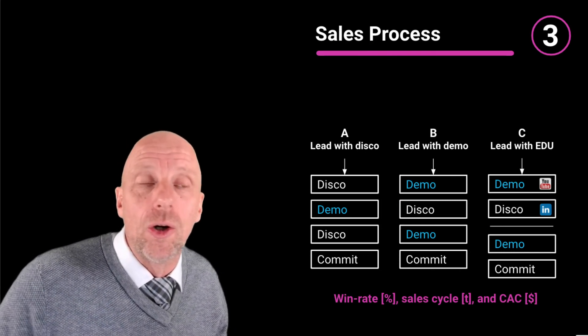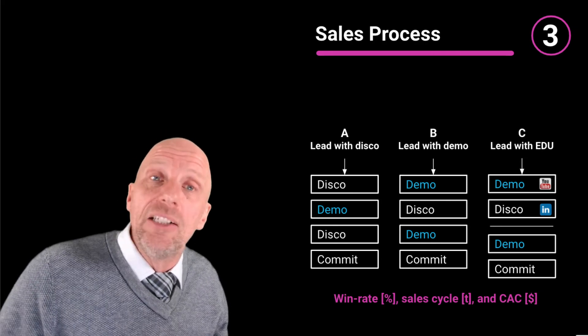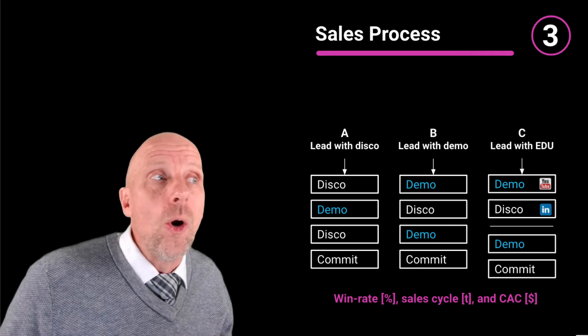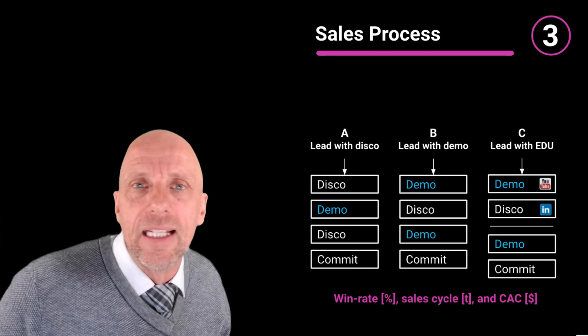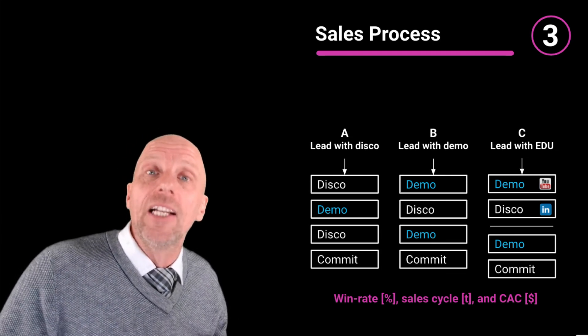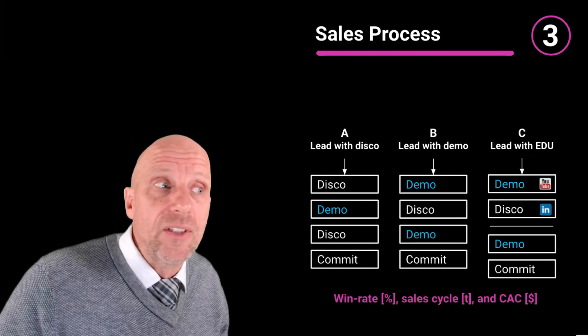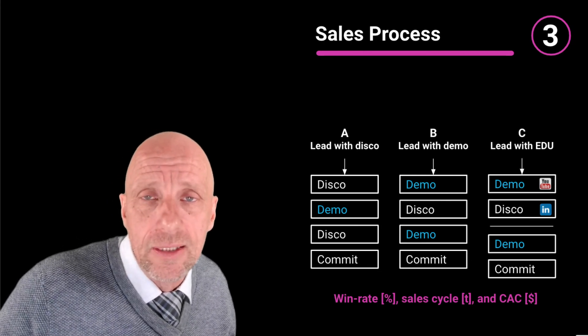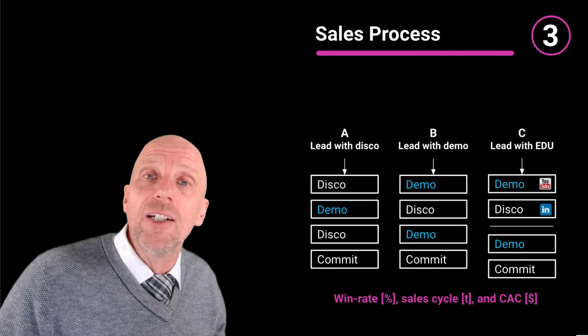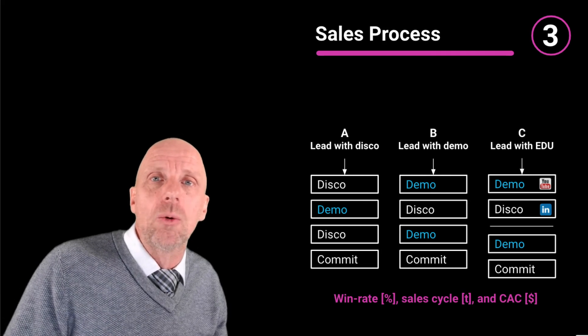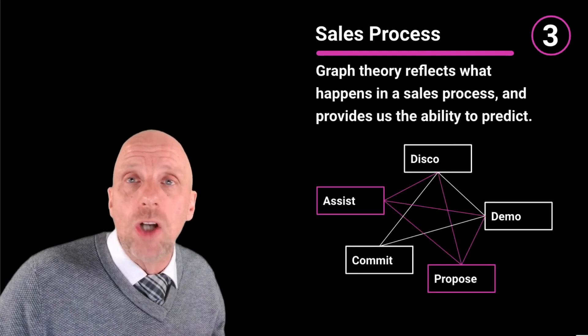If I compare these three different scenarios: scenario A, where I lead with an in-person discovery call, then demo, then another discovery call, then proposal and commitment. Or scenario B, where I lead with a demo, then disco, then demo, then commit. Or scenario C, where I lead with education online, provide a YouTube video, provide research material depicted through the LinkedIn icon, then they come to me, then I do a demo commit. What we can now determine is that based on any of these scenarios, what is the different win rate, the length of the sales cycle, and what is the anticipated client acquisition cost. We are currently anticipating that scenario C will have a higher win rate, a shorter sales cycle, and a lower client acquisition cost.